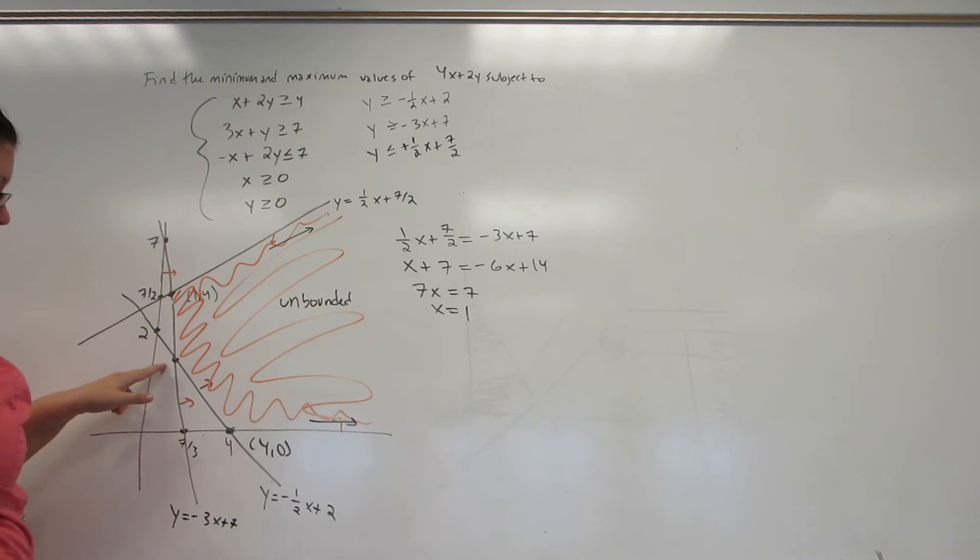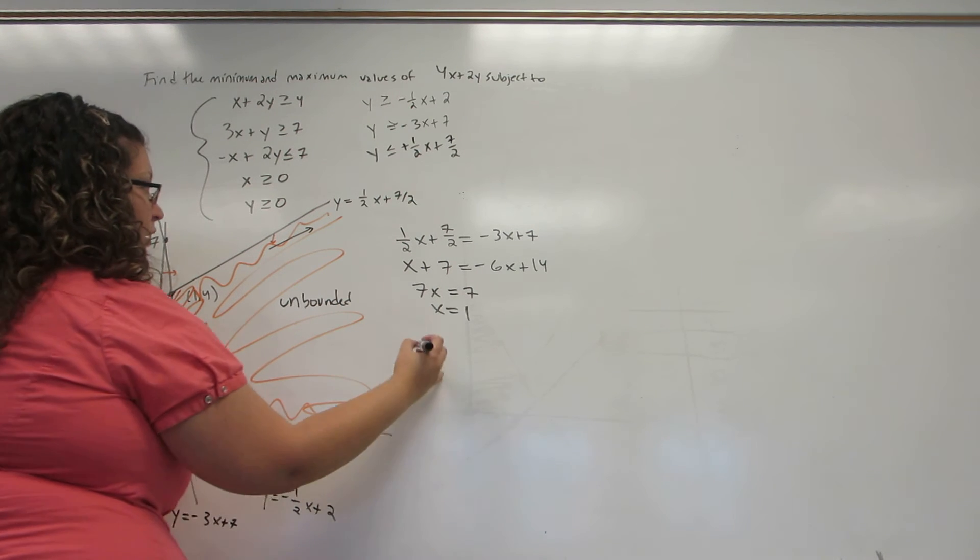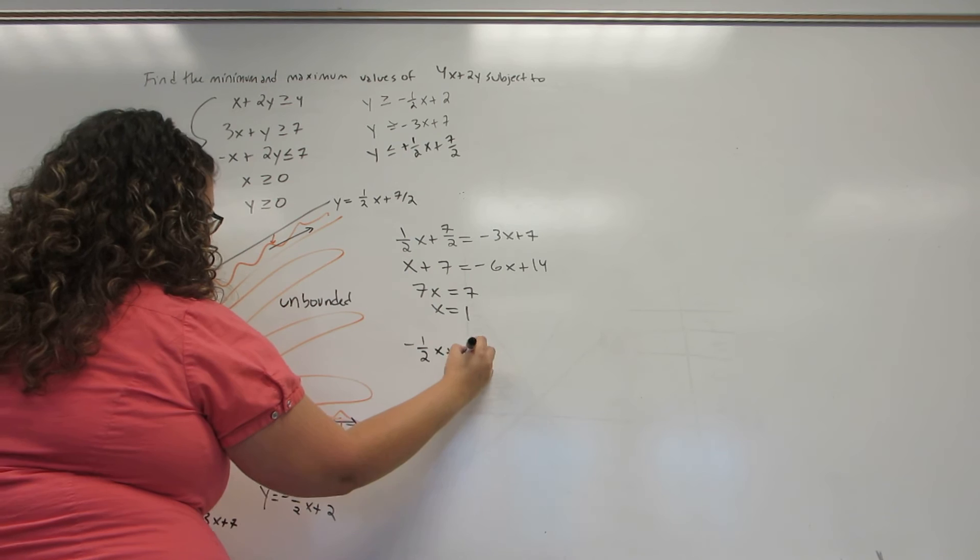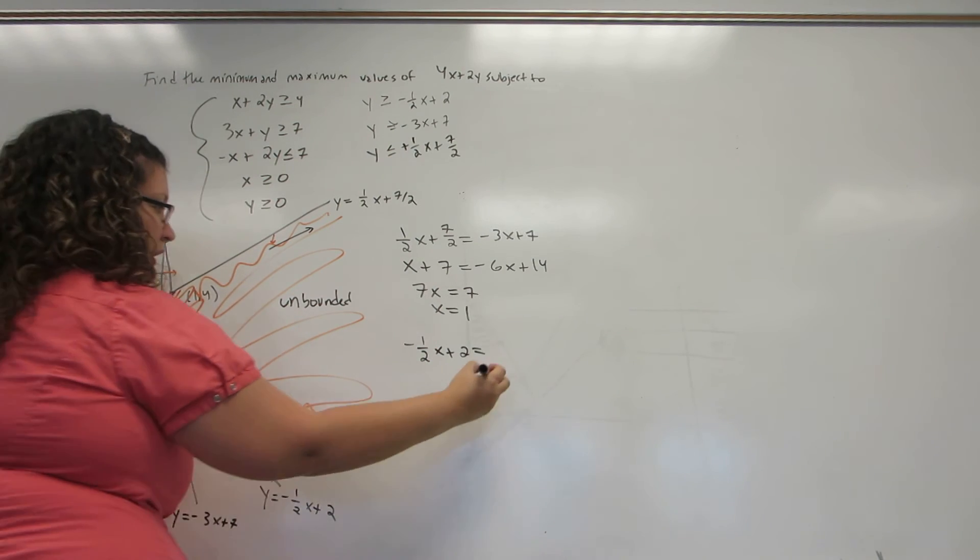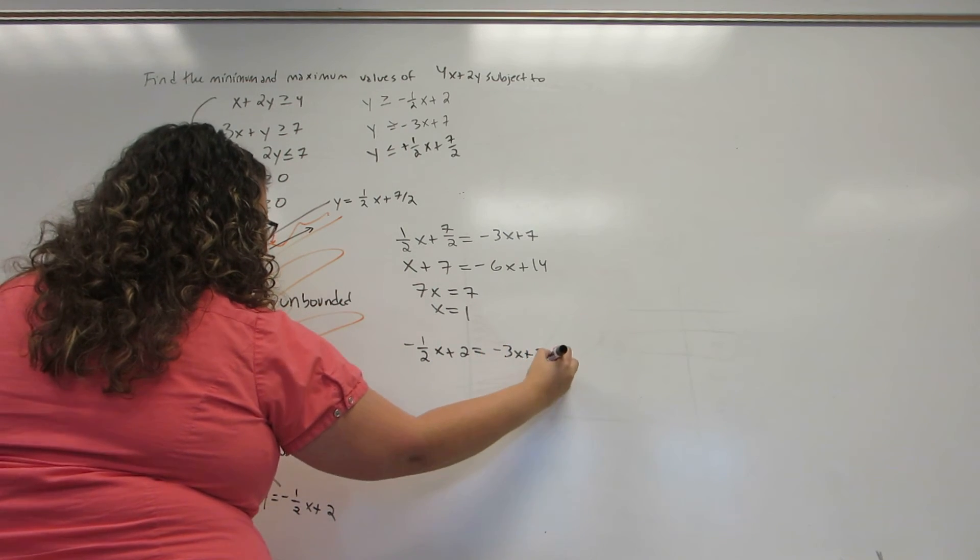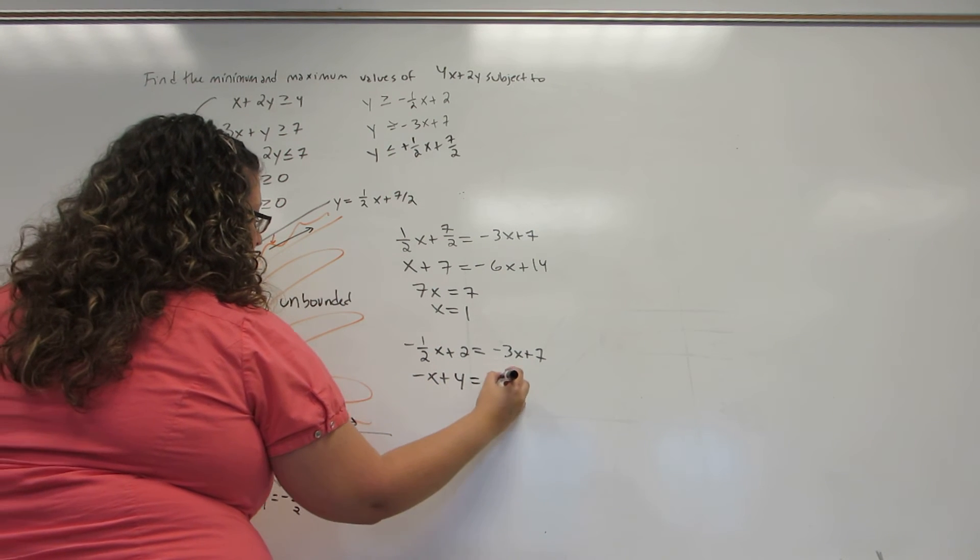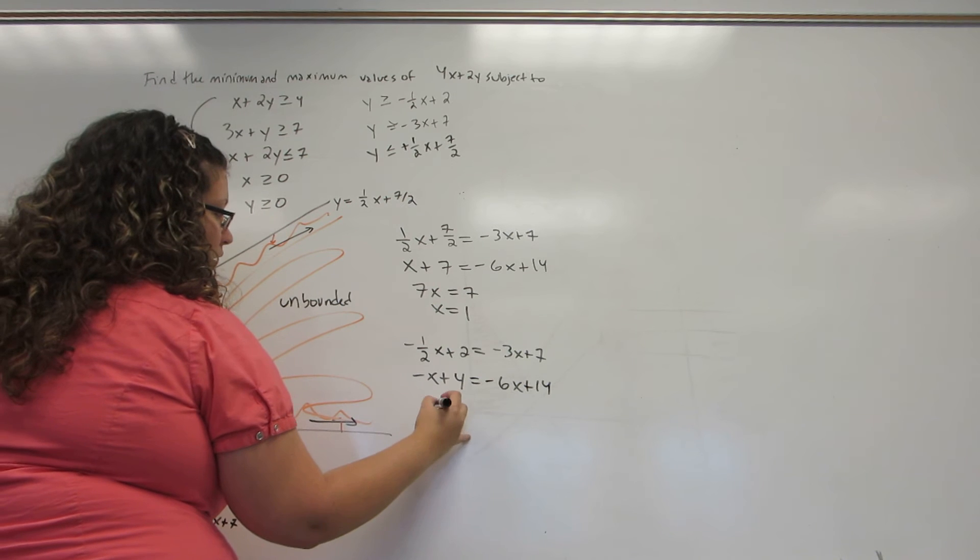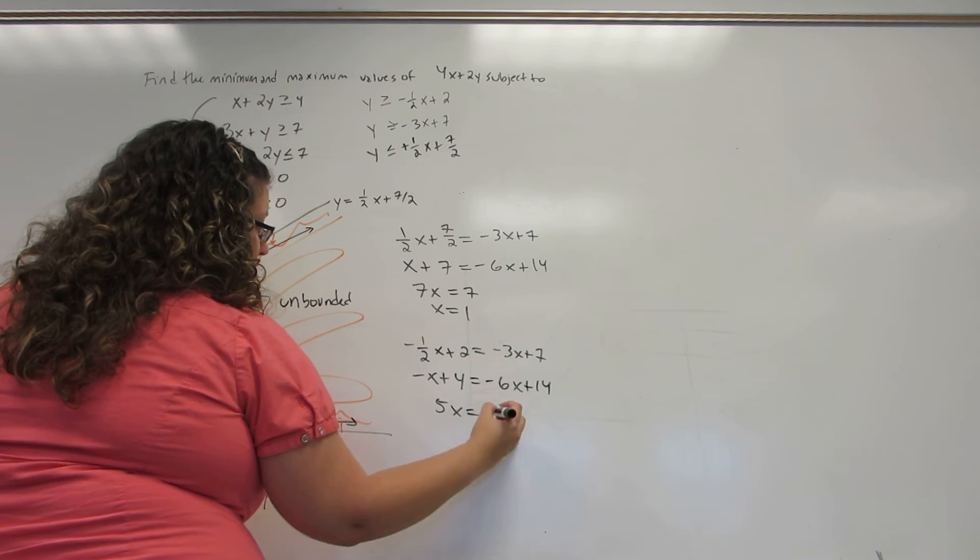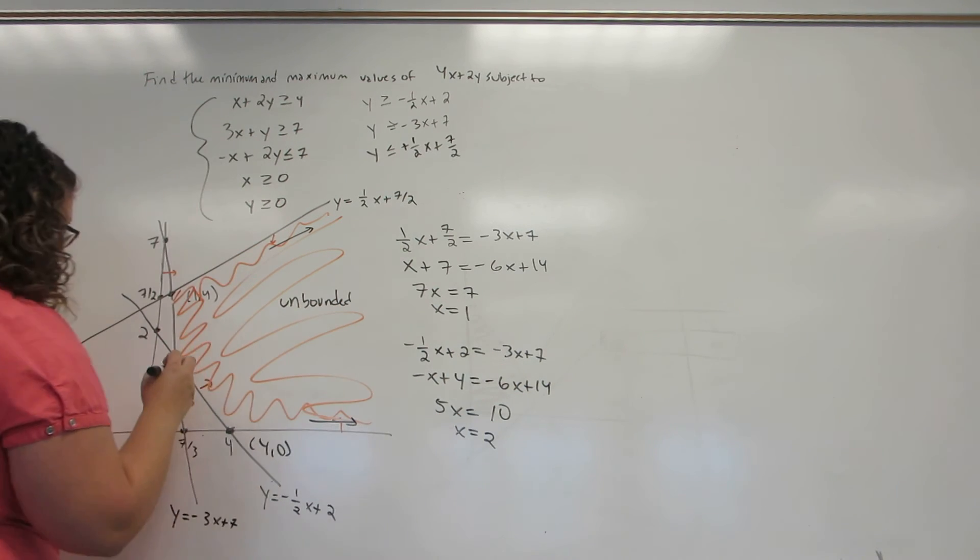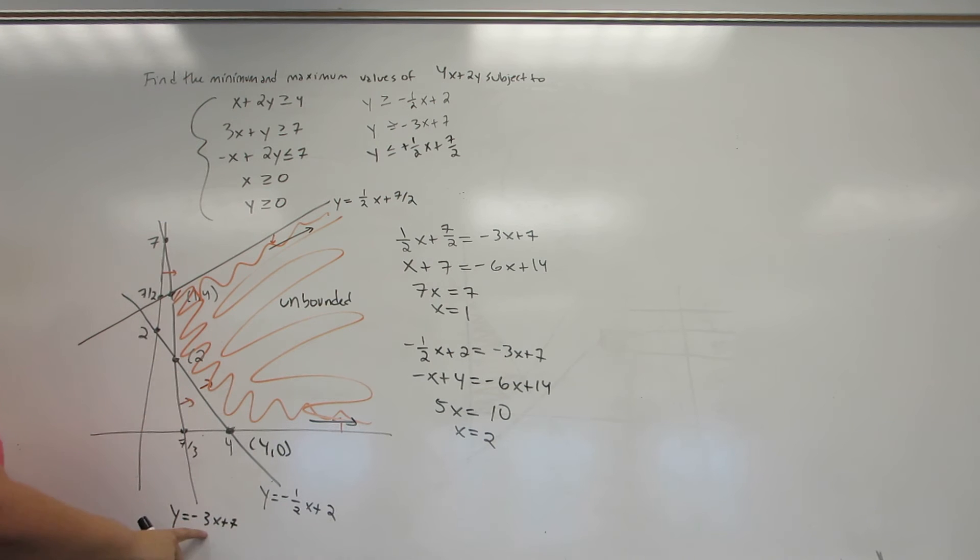Now, for this equation, this is where the line minus a half X plus 2 intersects the line minus 3X plus 7. Again, multiplying through to clear fractions and then solving for X gives me an X value of 2. Plugging it in to the easier of the two equations gives me that Y must be 1.